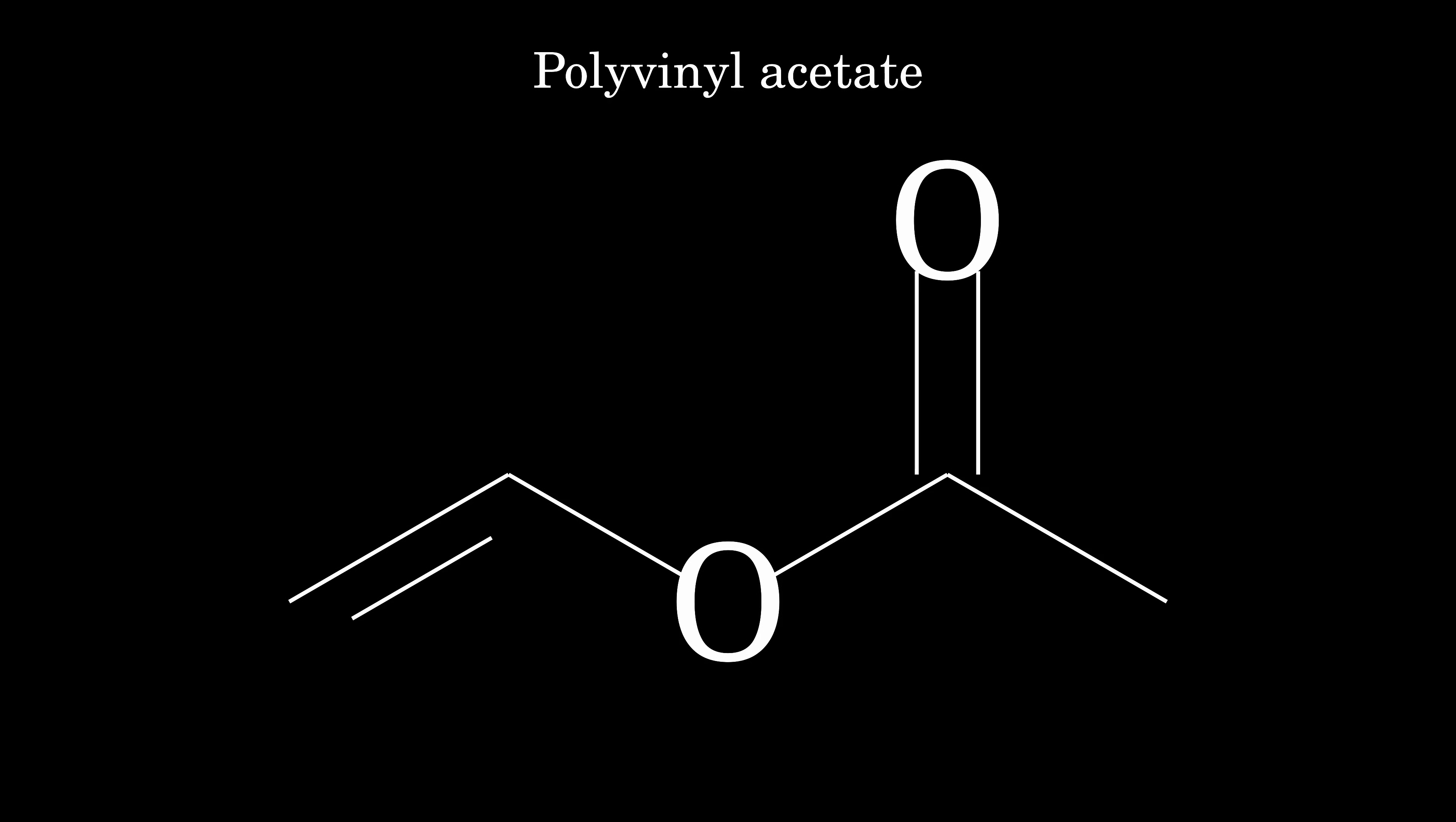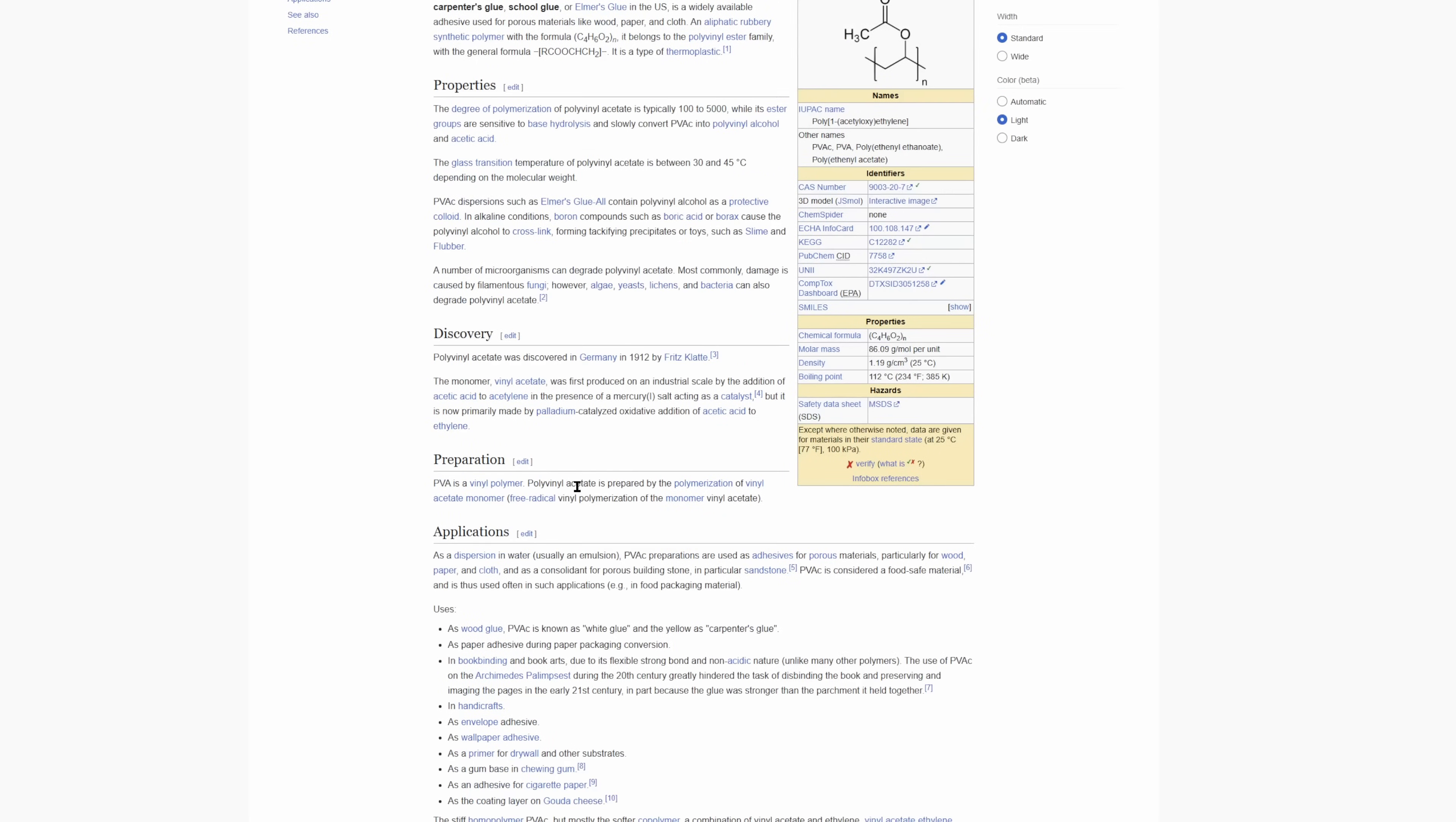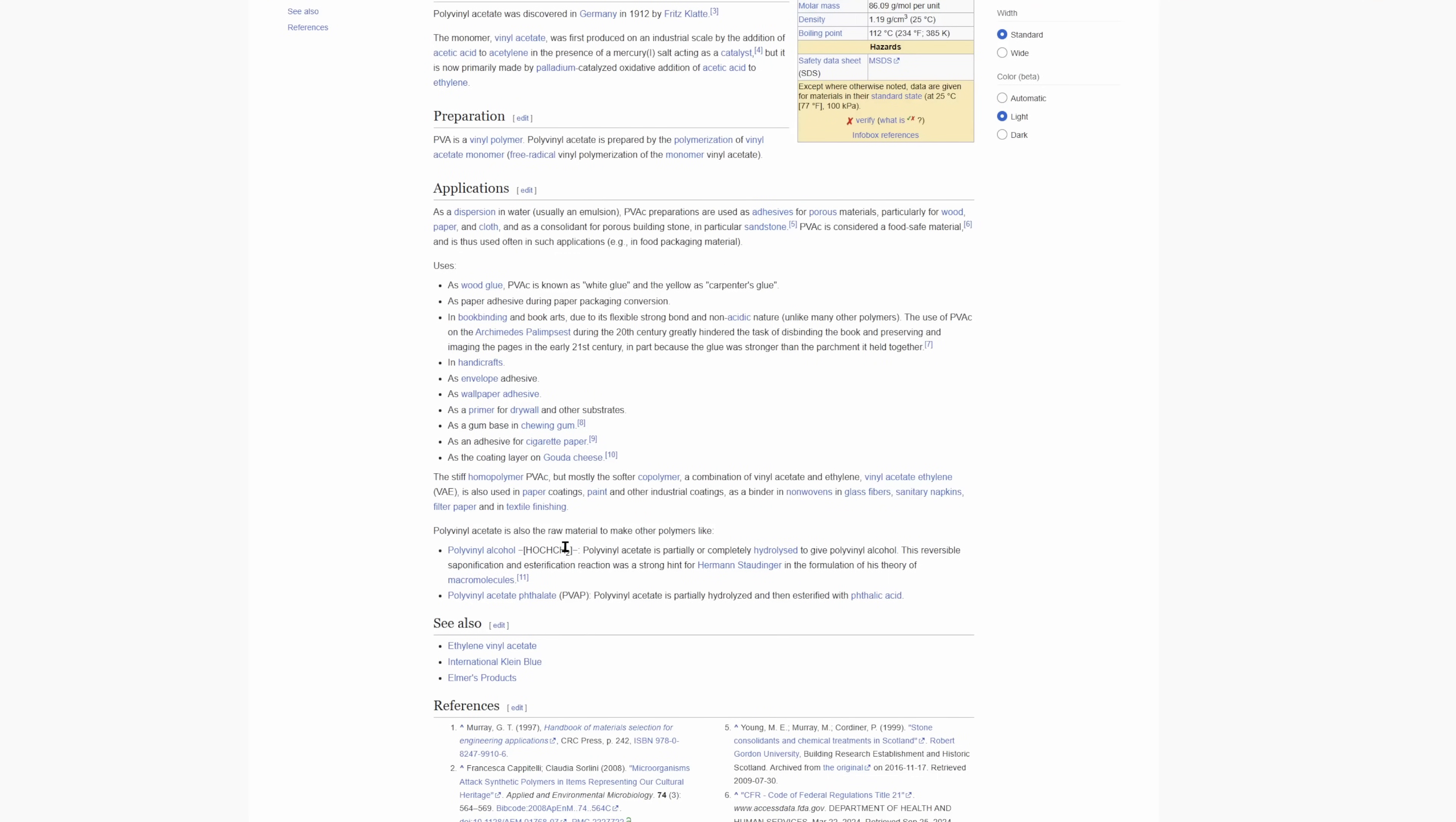An extensive amount of googling tells us that these are not the same chemical, but if we dive deeper, we can see that the polyvinyl acetate can be hydrolyzed, whatever that is, to make polyvinyl alcohol.